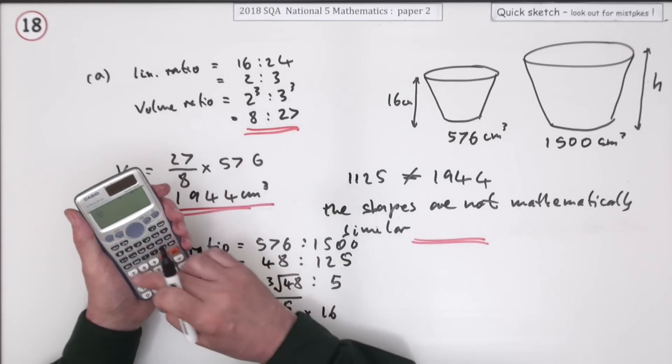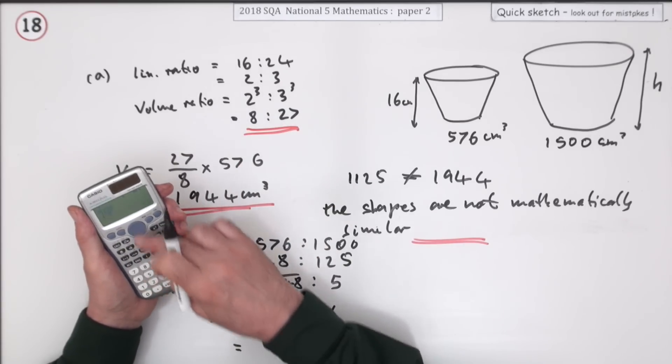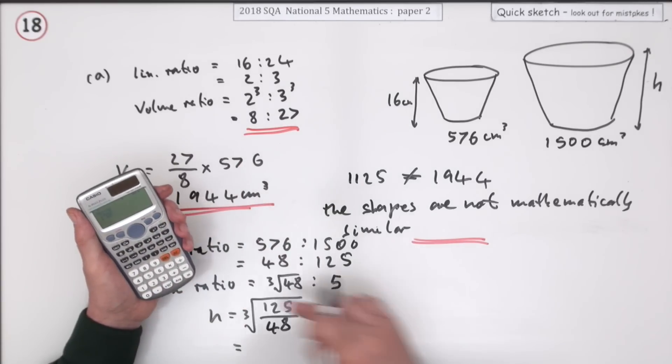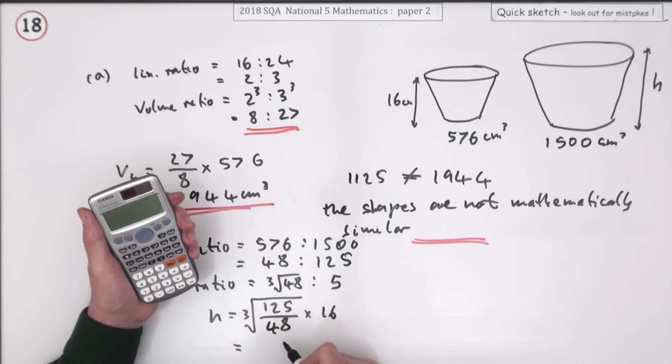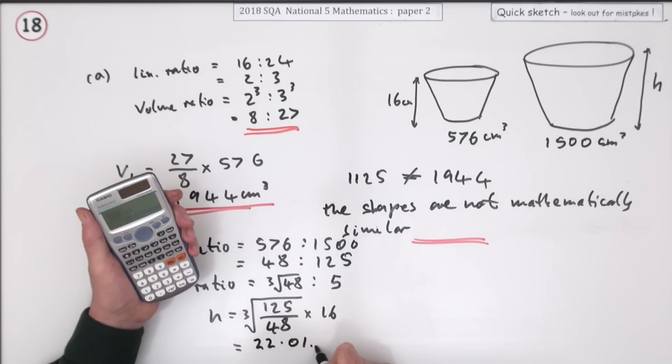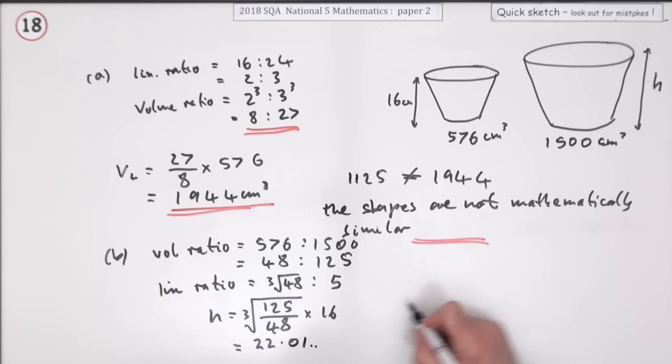So cube root button, and you get 22.01 and so on. So I'll say the new height should be 22.0 centimeters.